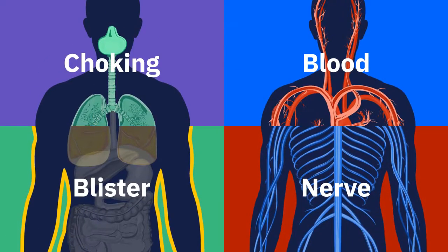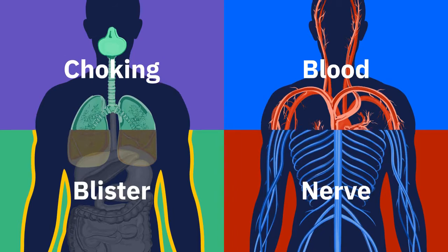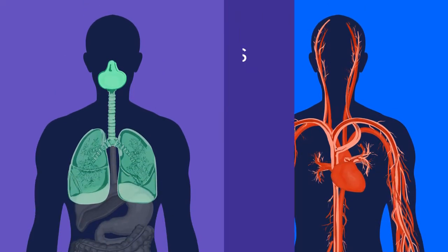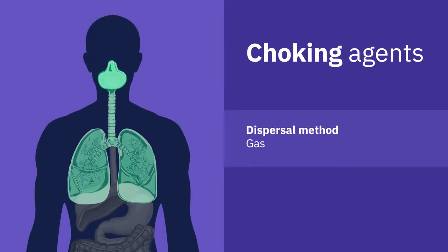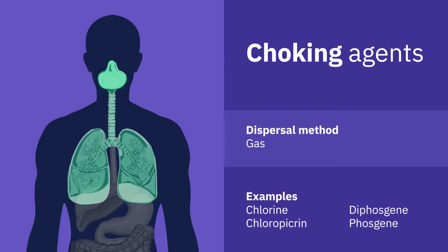There are four types of chemical agents used in chemical weapons, and each one affects the body in a different way. Choking agents mainly inflict injury on the respiratory tract, irritating the nose, throat and especially the lungs. When inhaled, these agents cause air sacs in the lungs to secrete fluid, essentially drowning those affected.